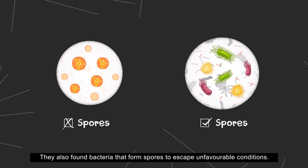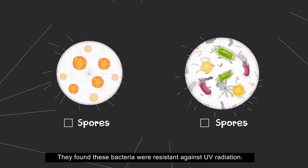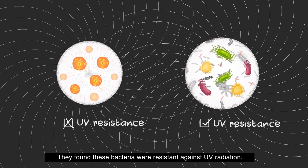They also found bacteria that formed spores to escape unfavorable conditions. These bacteria were resistant against UV radiation.